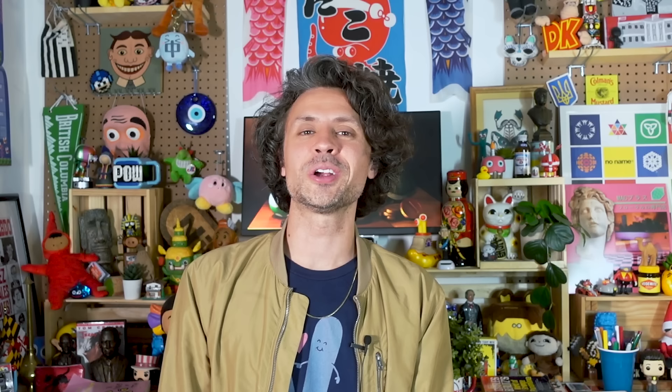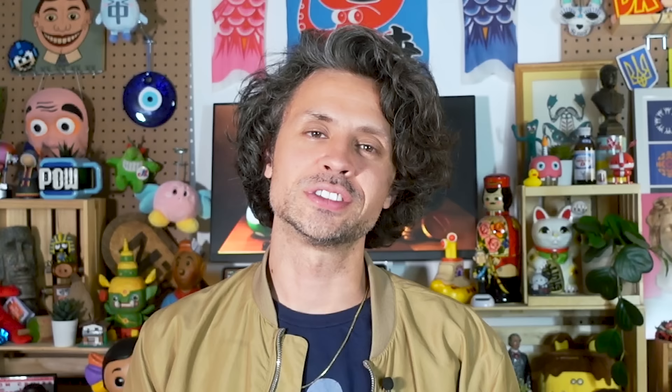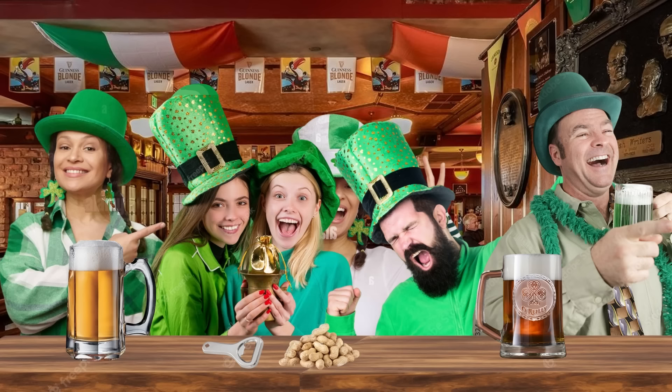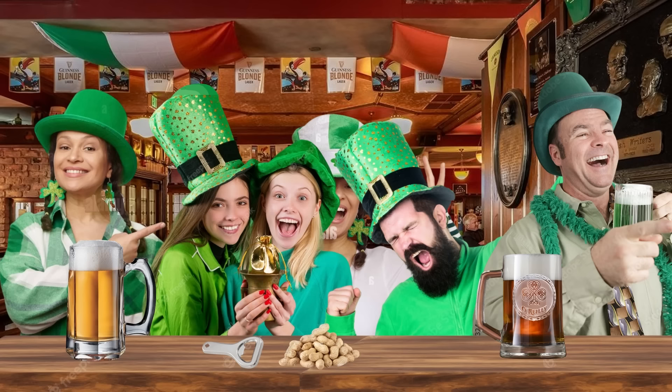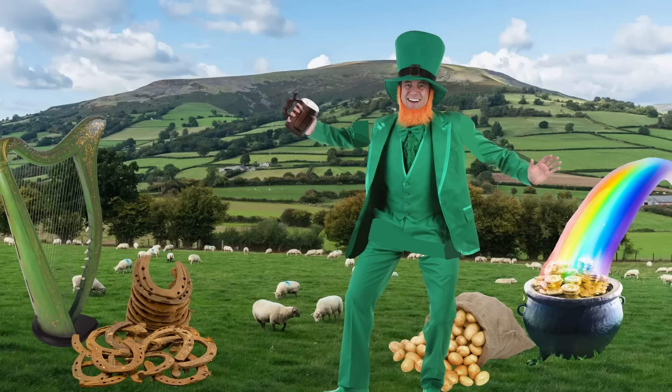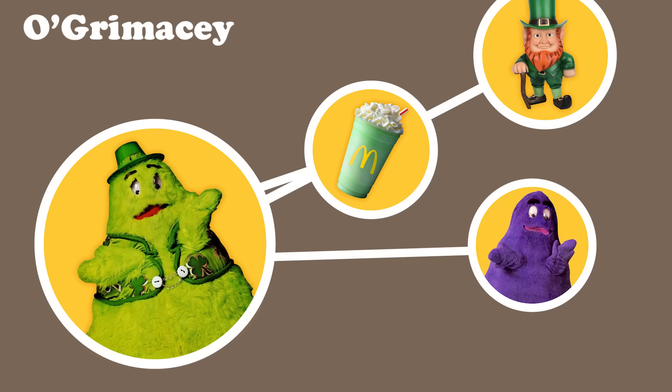A truly 4D McDonald's character would be Grimace's seldom-seen Uncle O'Grimacy. He is a reference to a specific McDonald's product, the Shamrock Shake that they sell around St. Patrick's Day, as well as a certain stereotypical conception of an Irish person, and the character of the original Grimace. Once again, three layers of prior cultural knowledge are required to understand the fourth.